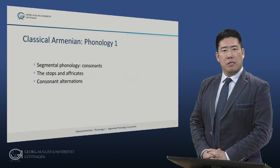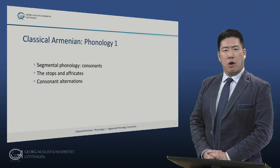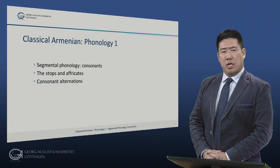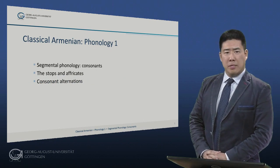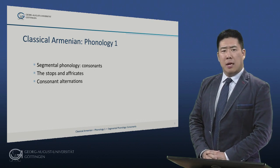Here's the roadmap for today's module. First we will present the consonant inventory of classical Armenian, then proceed to a discussion of the stops and affricates, and finally, consonant alternations.